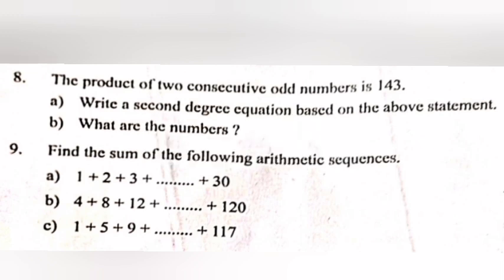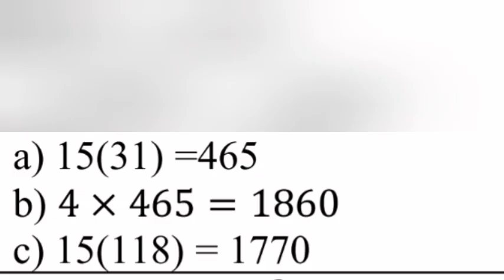Question 9: Find the sum of the following arithmetic sequences. Part A: 1 plus 2 plus 3 plus ... plus 30. Part B: 4 plus 8 plus 12 plus ... plus 120. Part C: 1 plus 5 plus 9 plus ... plus 117. Answer A: 15 into 31 equals 465. B: 4 into 465 equals 1860. C: 15 into 118 equals 1770.